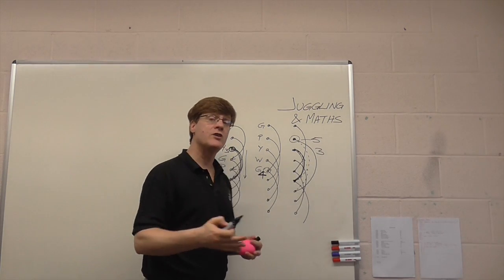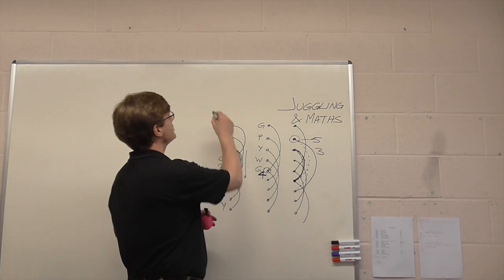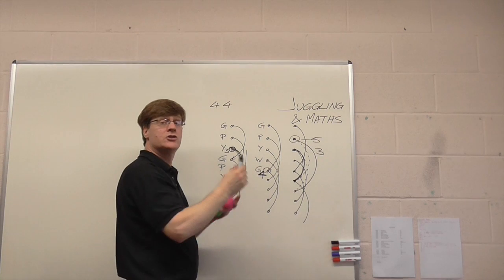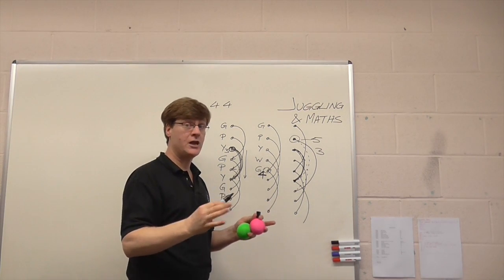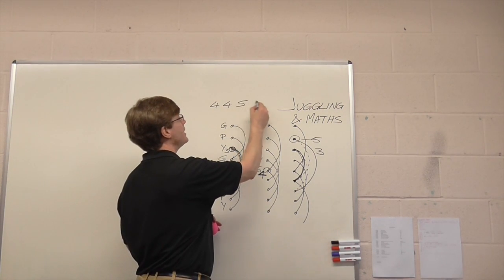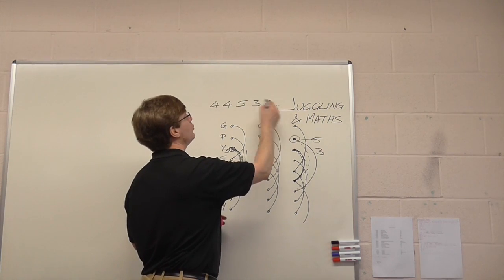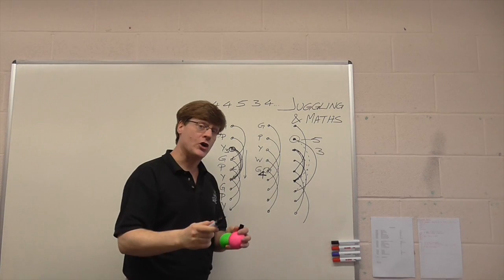So that juggling trick I can write down by saying do lots of fours and then suddenly, without any provocation, do a five and a three and then go back to doing fours. And that works.